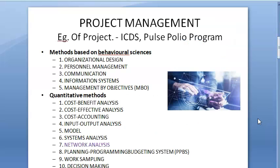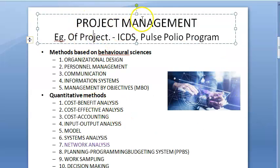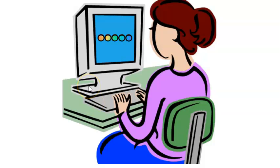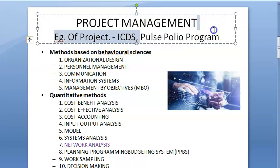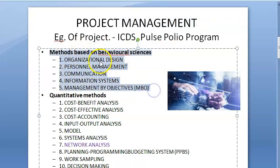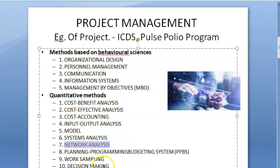In the exam, they can ask you PERT, critical path method, or network analysis — you have to write the same thing. In project management, under health planning, you can have projects like ICDS (Integrated Child Development Services), pulse polio programs, immunization programs, health education projects, etc. For these projects, you need management, which includes organization design, personnel management, communication, information, and in quantitative methods, network analysis.